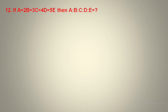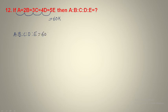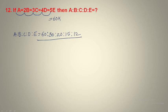Question number 12: a = 2b = 3c = 4d = 5e. The LCM of 1, 2, 3, 4, 5 is 60. Consider this equals 60k. Then a = 60k, b = 30k, c = 20k, 4d = 60k so d = 15k, 5e = 60k so e = 12k. Final ratio: a:b:c:d:e = 60 is to 30 is to 20 is to 15 is to 12.